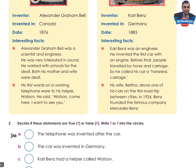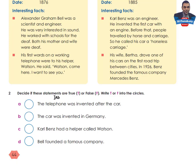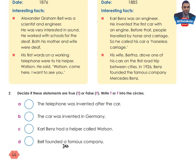Now let's look at number two. Decide if these statements are true or false — write T or F in the circles. A: The telephone was invented after the car. B: The car was invented in Germany. C: Karl Benz had a helper called Watson. D: Bell founded a famous company. Take your time to decide if these statements are true or false, then come back to check your answers.